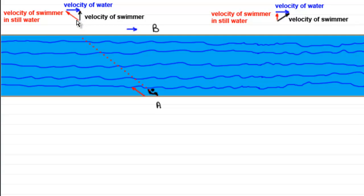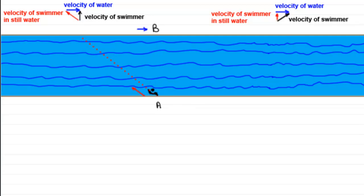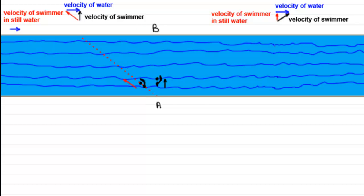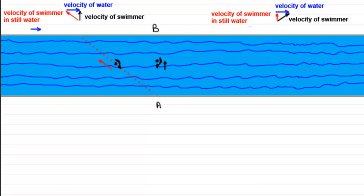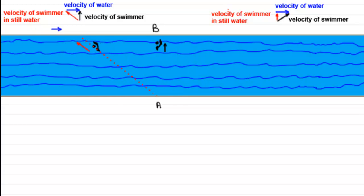The combination of his swimming in still water with the velocity of the water results in the velocity of the swimmer heading across from A to B. Let's have a look, see how that happens. So you can see that that combination there allows the swimmer to swim from A to B.